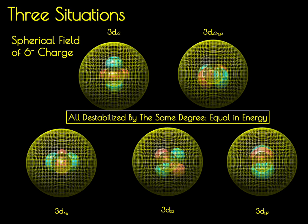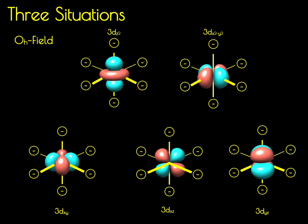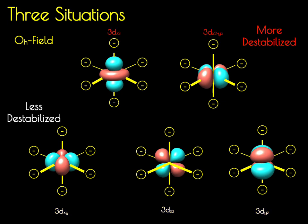We're now going to take this spherical field and localize those charges in an octahedral field. When we apply this octahedral field, we now have some directionality associated with that field, meaning that it's going to interact with some of those orbitals more strongly than others. The dz² and the dx²-y² have those orbitals oriented directly on the molecular axes — pointed directly towards those negative point charges — so they're going to be more strongly destabilized. The dxz, dyz, and dxy all have those lobes oriented off-axes, so they're going to be less destabilized by those negative point charges.